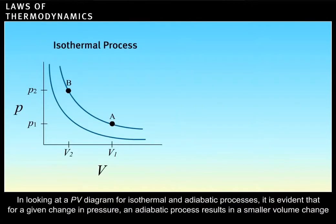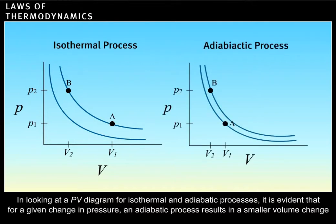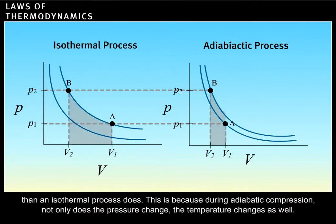In looking at a P-V diagram for isothermal and adiabatic processes, it is evident that for a given change in pressure, an adiabatic process results in a smaller volume change than an isothermal process. This is because during adiabatic compression, not only does the pressure change, the temperature changes as well.